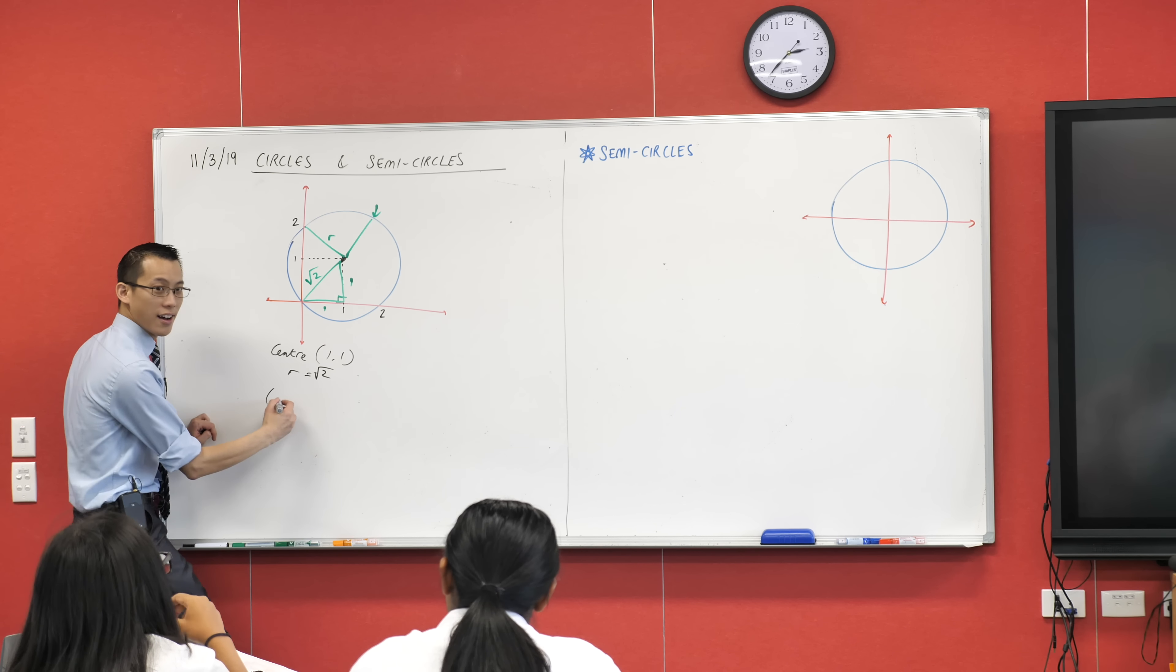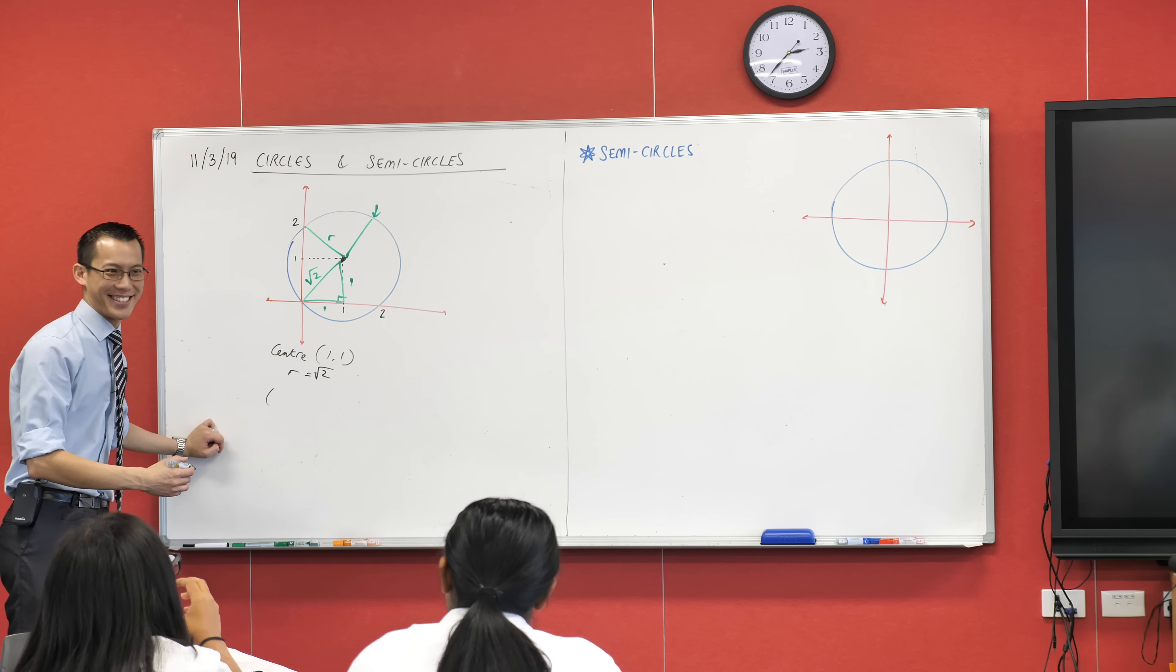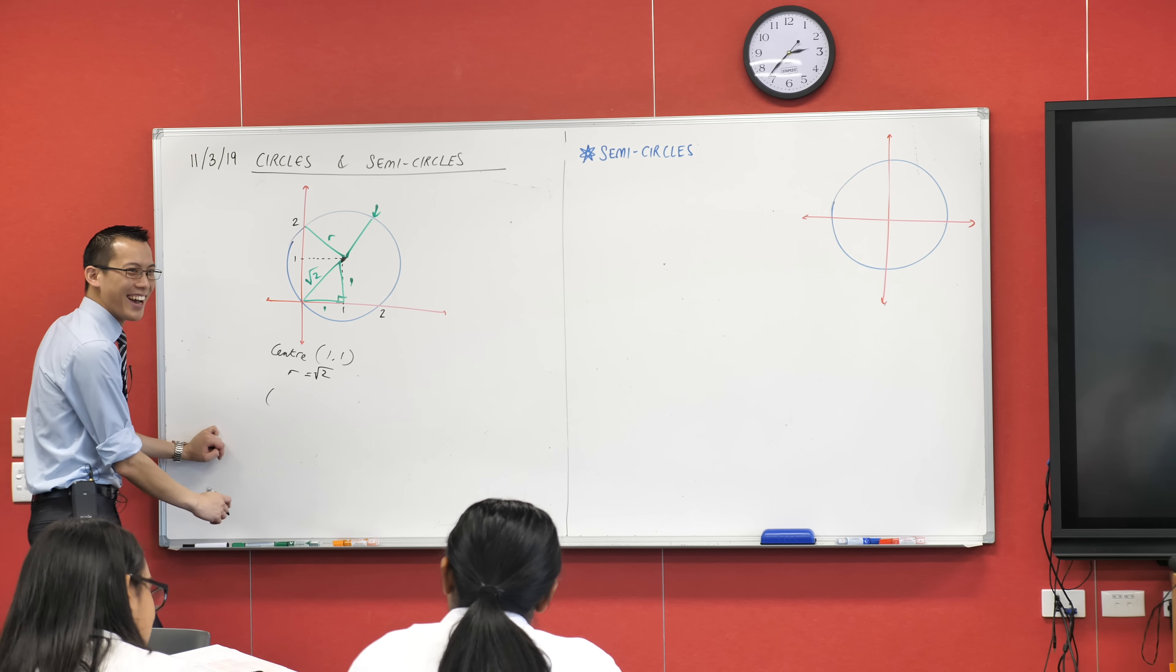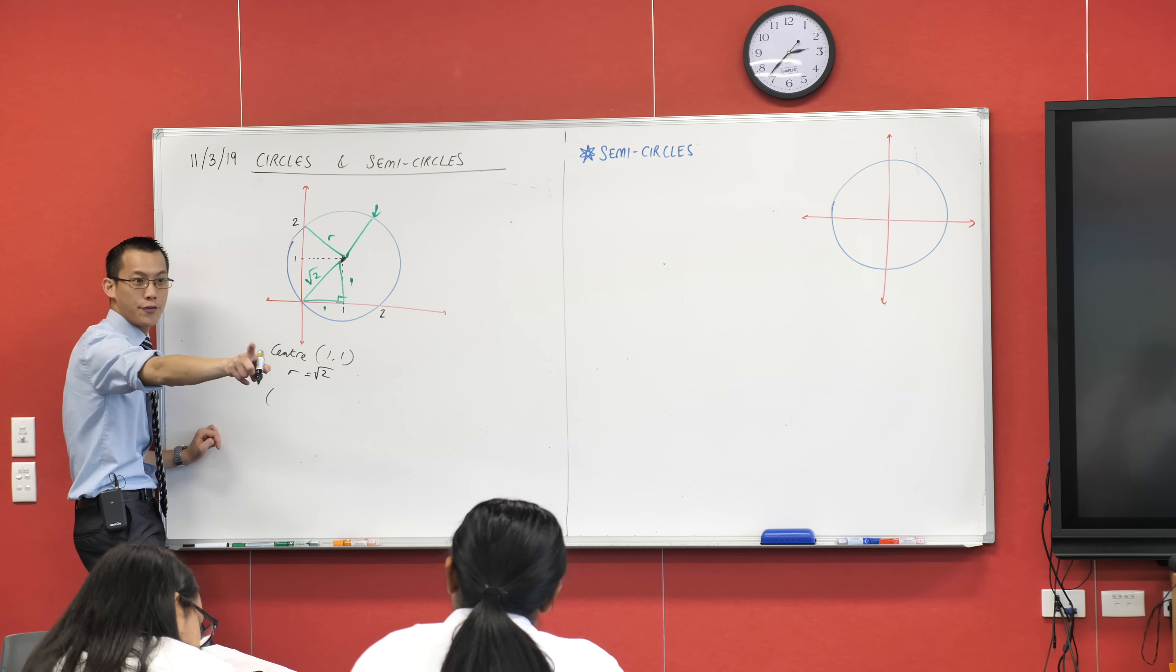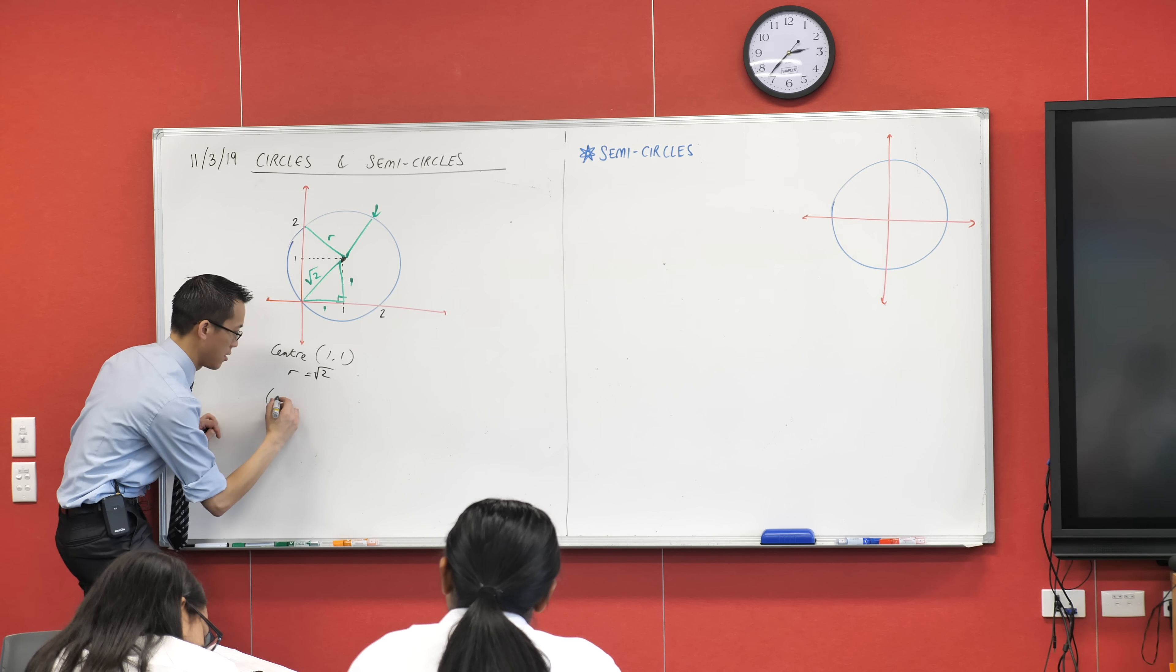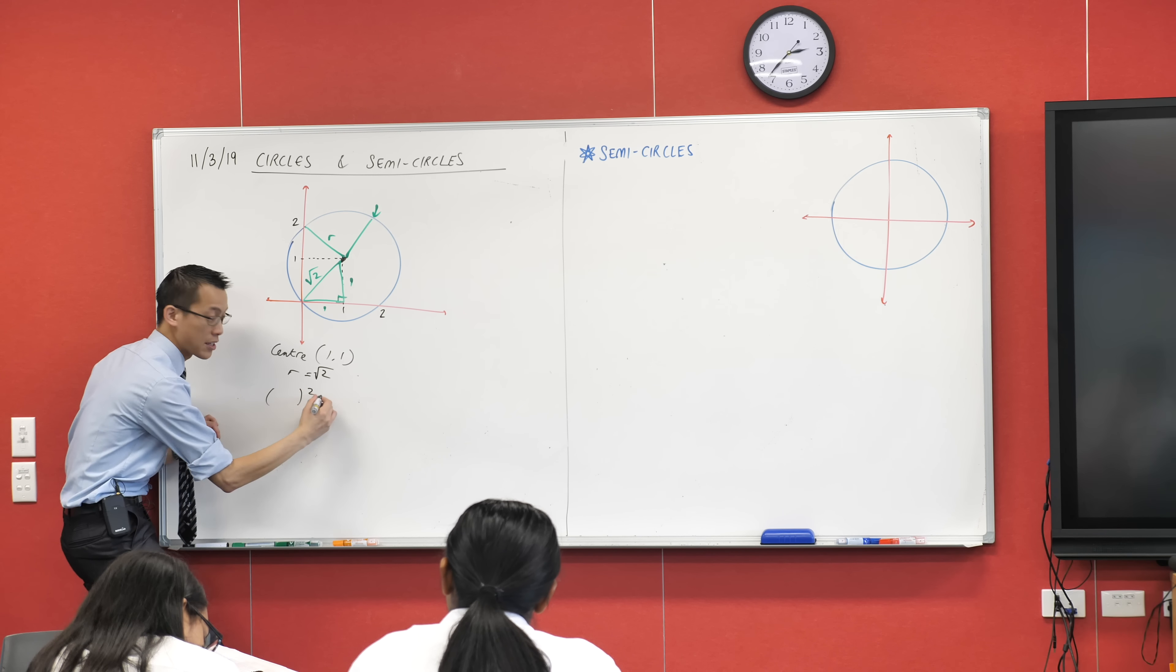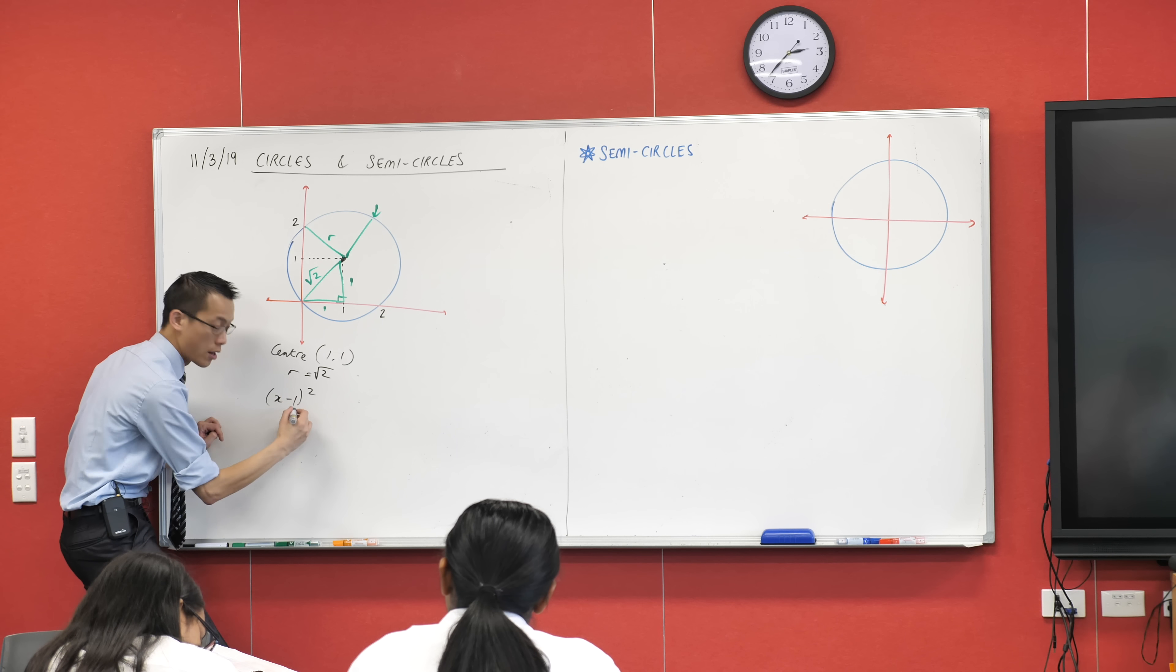So if the radius equals root 2, what will the equation be? Let's start with some brackets, rather than throwing out random numbers. Ishan, do you want to start us off? Don't do the whole thing, just start us off. I'm going to have something squared: x minus 1, all squared.